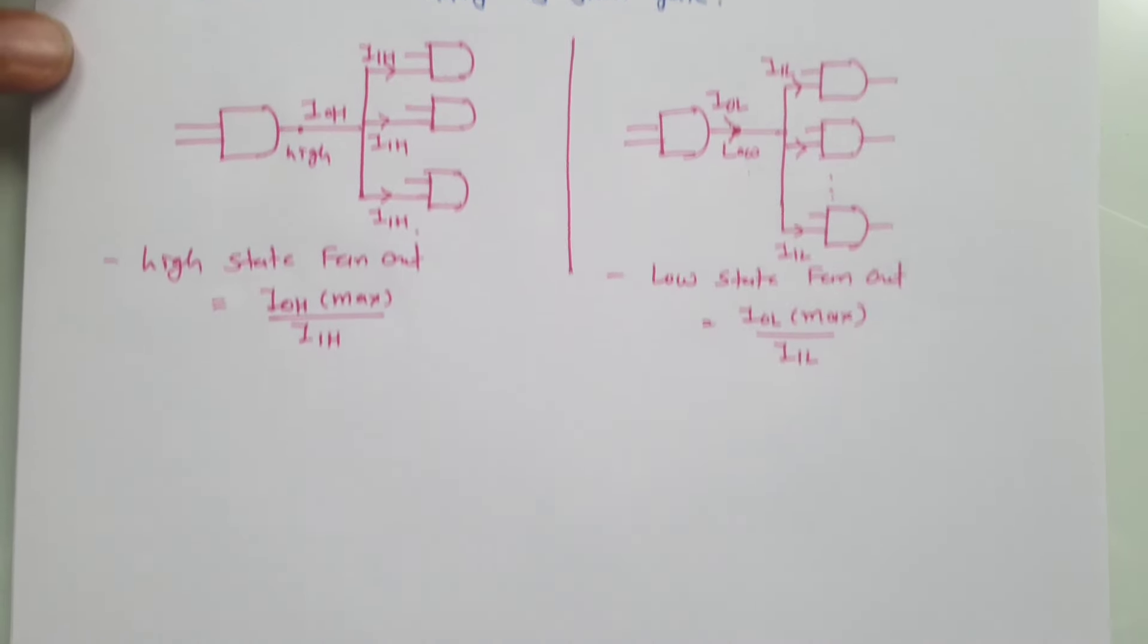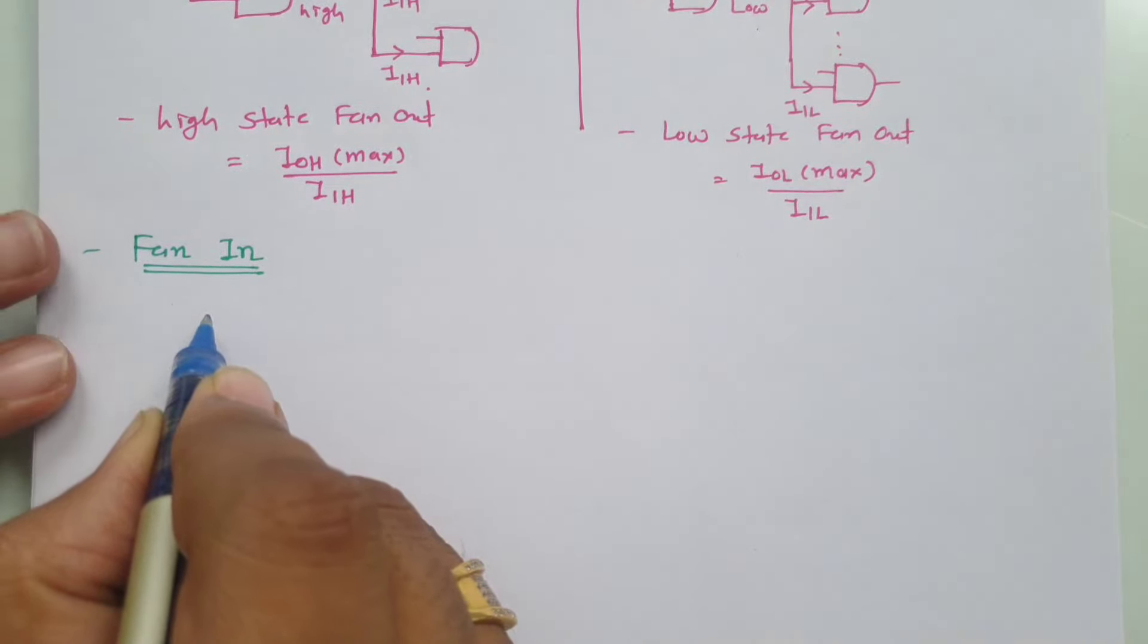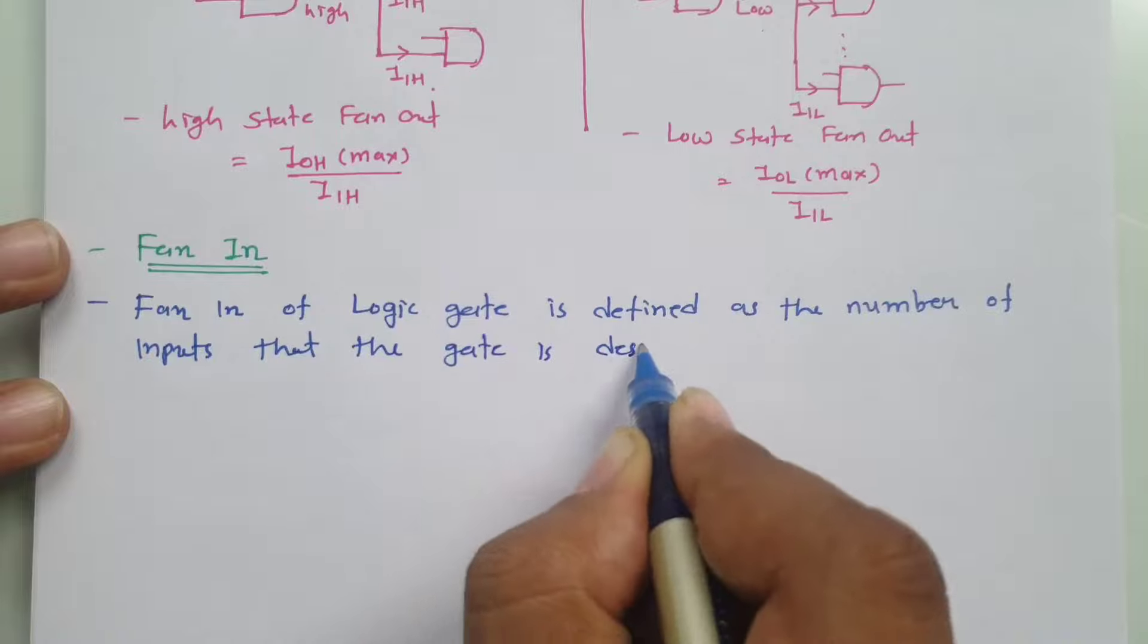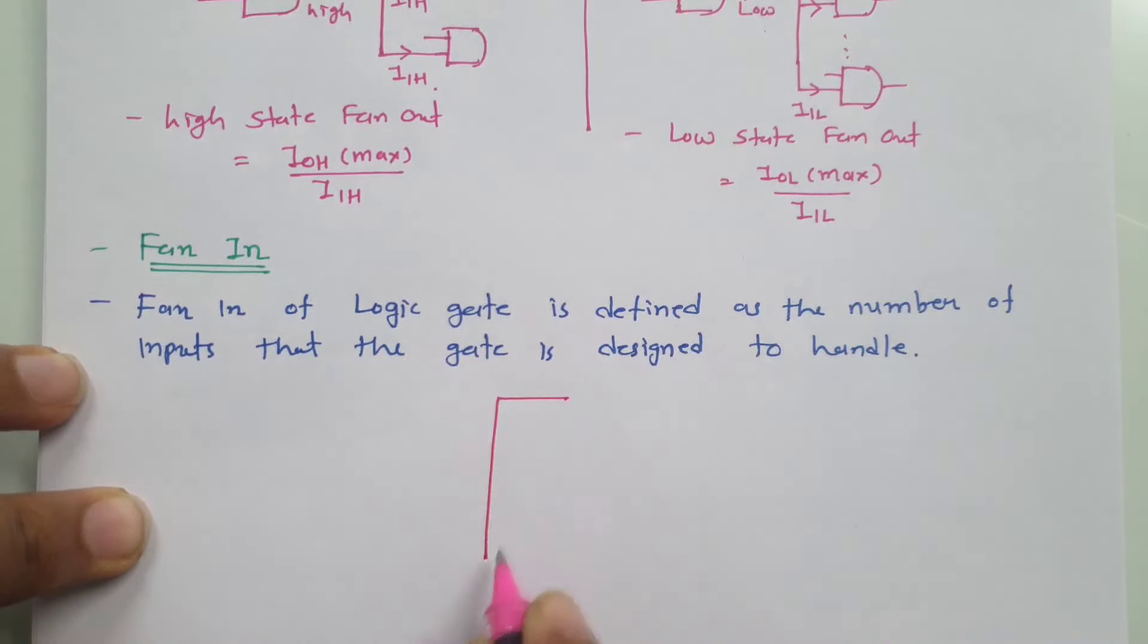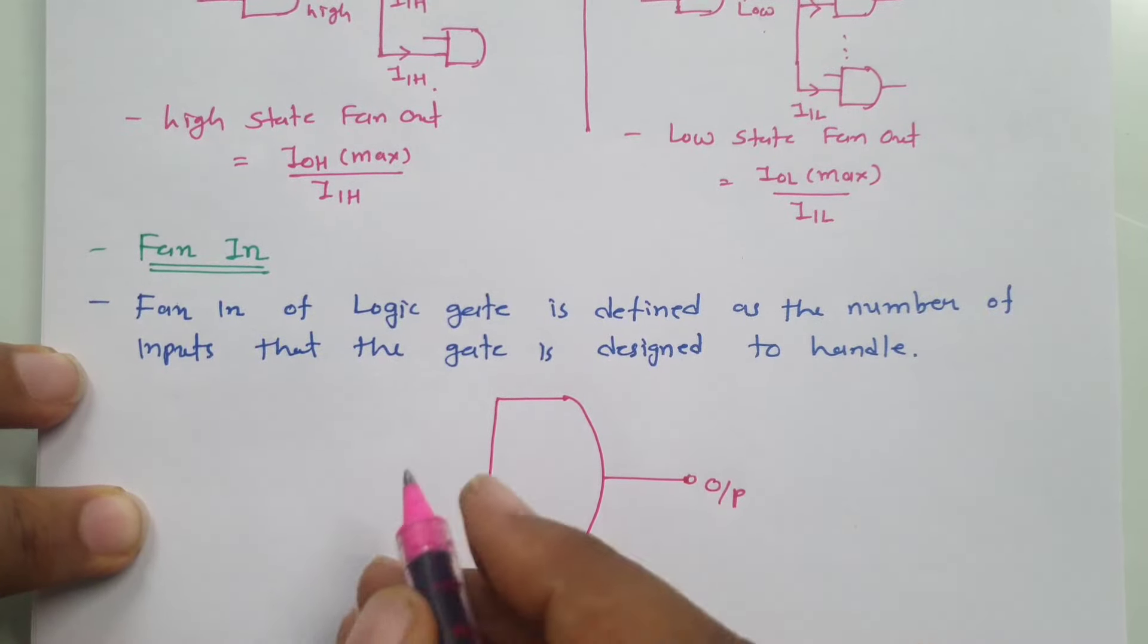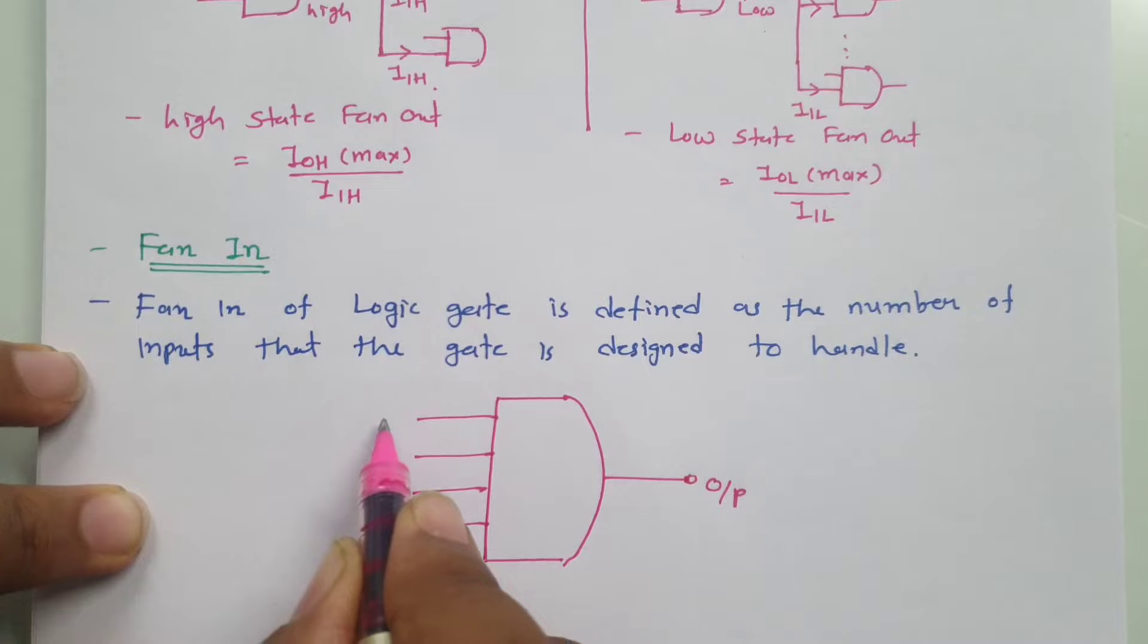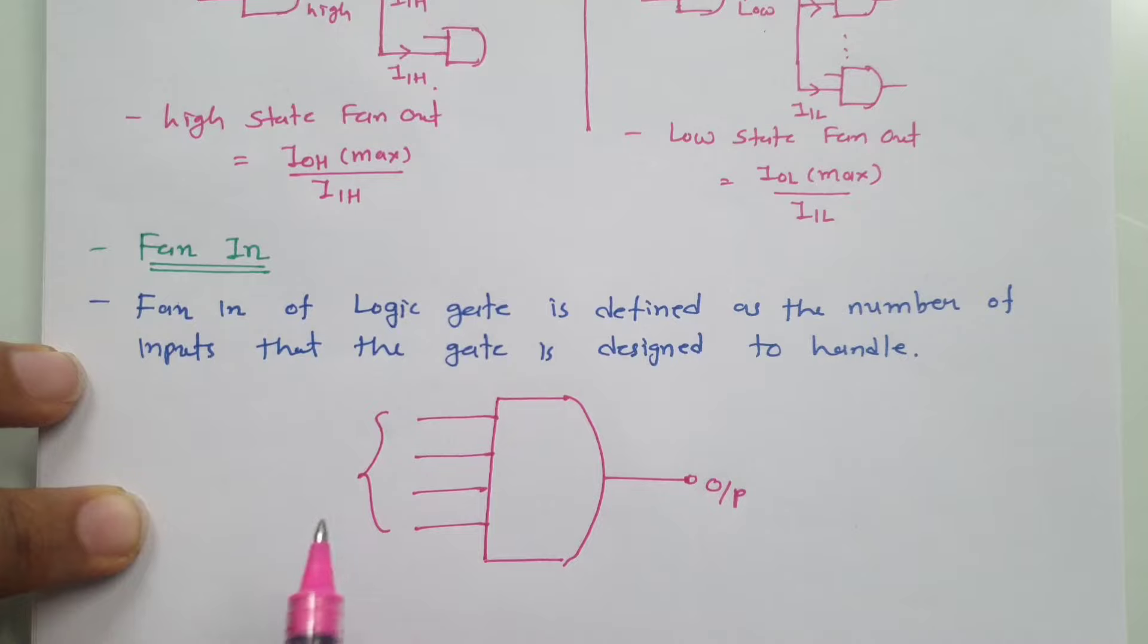Now let us try to understand what is fan-in. Fan-in of the logic gate is defined as the number of inputs that the logic is designed to handle. So for example, if I have one AND gate and here we have output of this AND gate, and if I say with this AND gate number of inputs designed for this AND gate, let us say that is N, then we can say fan-in of this gate is N.